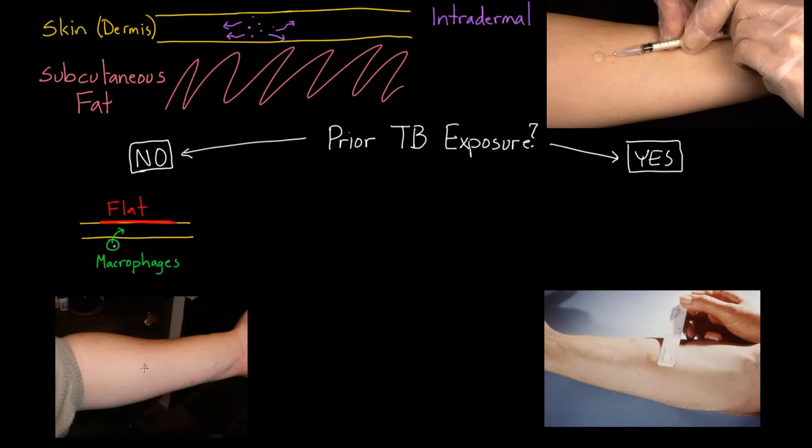Looking at this picture you can see a little bit of redness here, but if you were to feel it with your finger it would be flat. So it's red but it's flat, and that's the key. And so this person we would say, if there was no bulge or bump, we would say this person has a negative PPD. This person right here has a negative PPD, so that's basically how we would read this flat PPD.